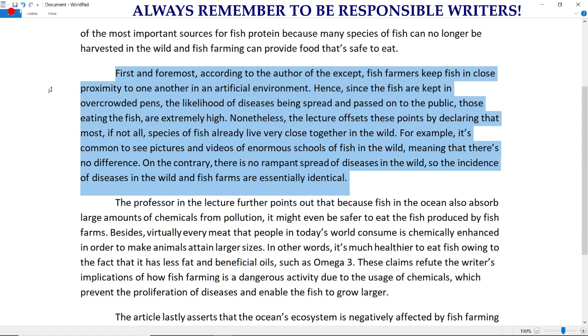First and foremost, according to the author of the excerpt, fish farmers keep fish in close proximity to one another in an artificial environment. Hence, since the fish are kept in overcrowded pens, the likelihood of diseases being spread and passed on to the public—those eating the fish—are extremely high. Nonetheless, the lecture offsets these points by declaring that most, if not all, species of fish already live very close together in the wild. For example, it's common to see pictures and videos of enormous schools of fish in the wild, meaning that there is no difference. On the contrary, there is no rampant spread of diseases in the wild, so the incidence of diseases in the wild and fish farms are essentially identical. Okay, let's move on to the second body paragraph.